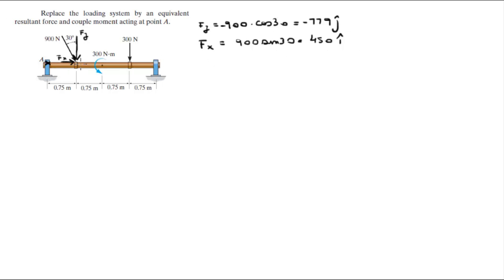So now that we have the X and Y components, we can calculate the sum of the forces in the X. The only one we have is F, so the sum of the forces in the X come out to be 450 to the right.